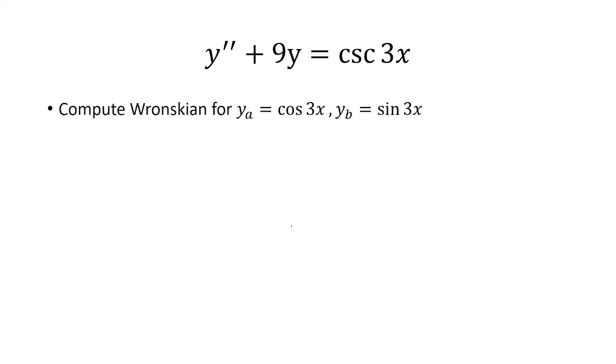Now we want to compute the Wronskian for those two. So we're going to look at the determinant. First we put in cosine 3x, and then below it we want to take the derivative of cosine 3x. And then to the right here we have sine 3x, and then take the derivative of sine 3x.